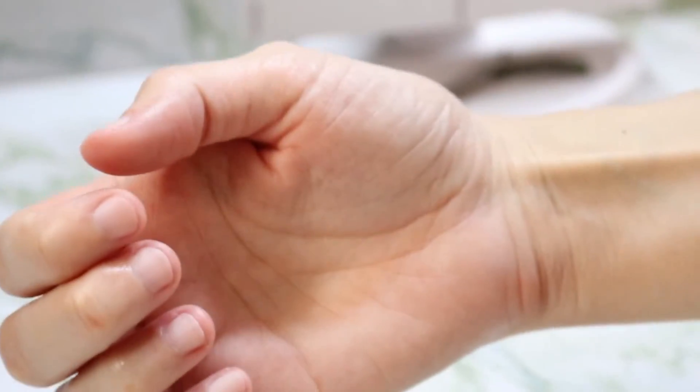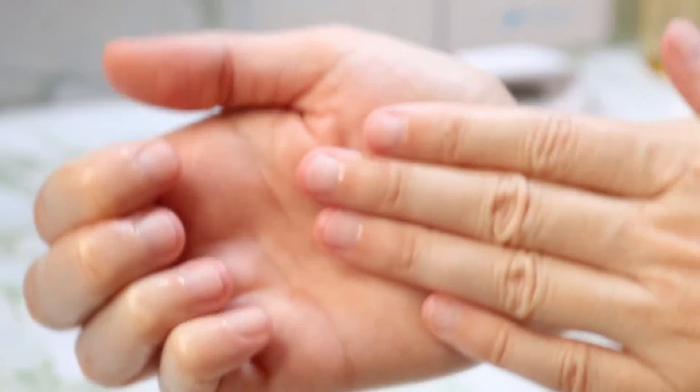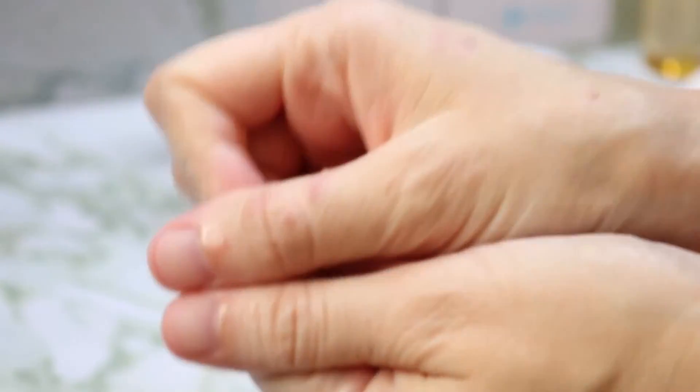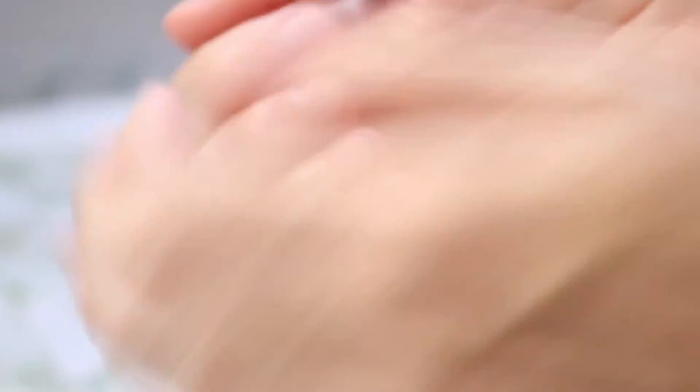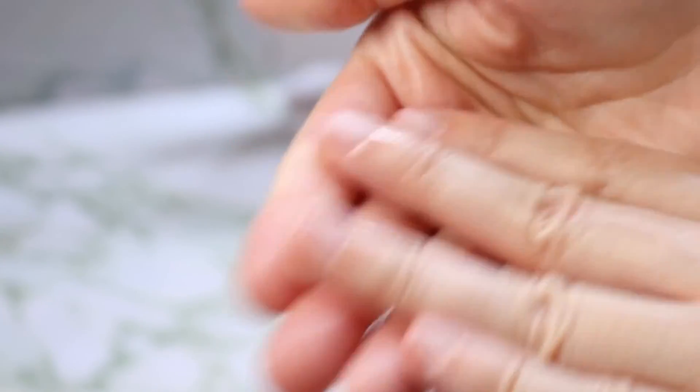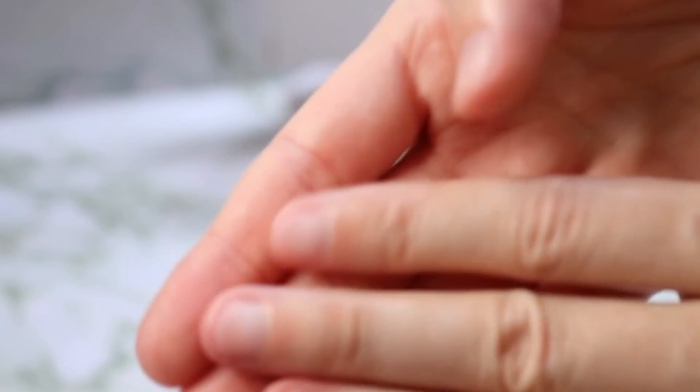I literally chop every inch of white off of them that I can, so that there is no more white on my nail. I cut all of the extra length and whatnot off my nails. So this is what my nails look like right now.